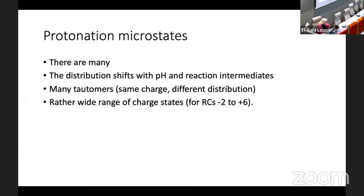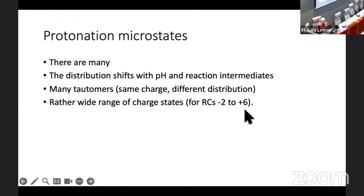There are lots of protonation microstates. The distribution will see shifts when we do reactions, when we change the pH. There are often many tautomers with the same net charge but different distributions. I also found it interesting that there can be a wide range of charge states — for the reaction centers, we saw charge states from minus two to plus six in the ensemble.